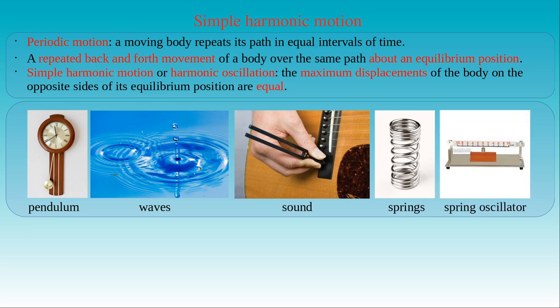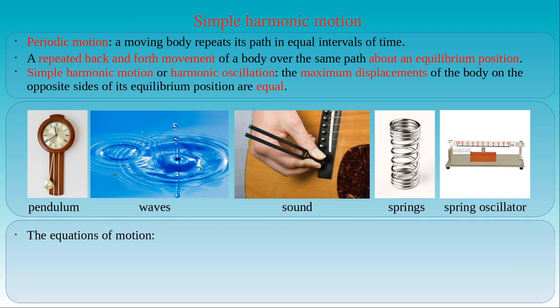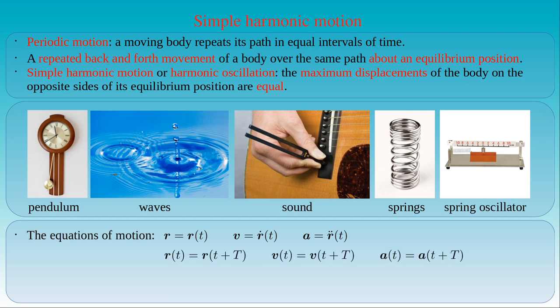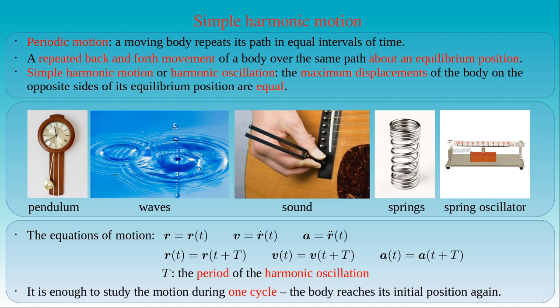A spring oscillator consists of a spring fixed with one end and a body attached to its other end. Here we can see an apparatus with a vertical spring attached to a weight sliding on a guide rail. The displacement of the weight along the axis of the spring can be measured with a ruler. Let us start with the main property of the equations of motion for simple harmonic motion. If the position vector of the body is given, then the velocity can be obtained by differentiating it with respect to time, and its second order derivative equals the acceleration. Since the simple harmonic motion is periodic, the position vector r at time t is the same as at time t plus the period T. Both the velocity and the acceleration are periodic with the same period T, so it is enough to study the motion during one cycle.